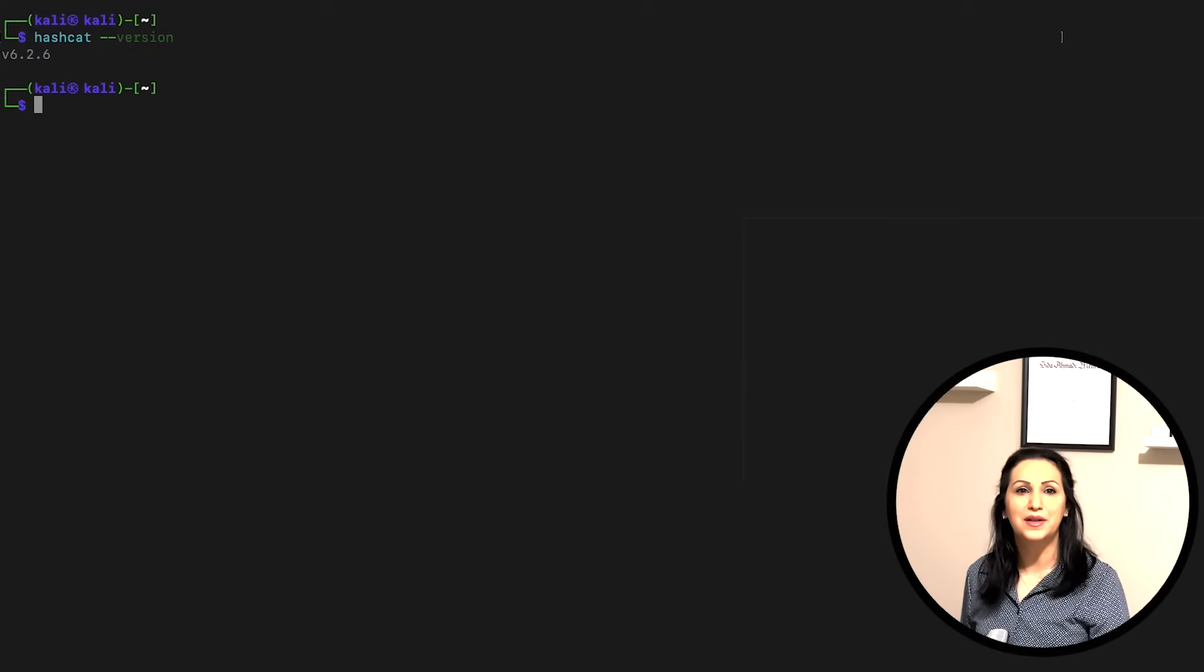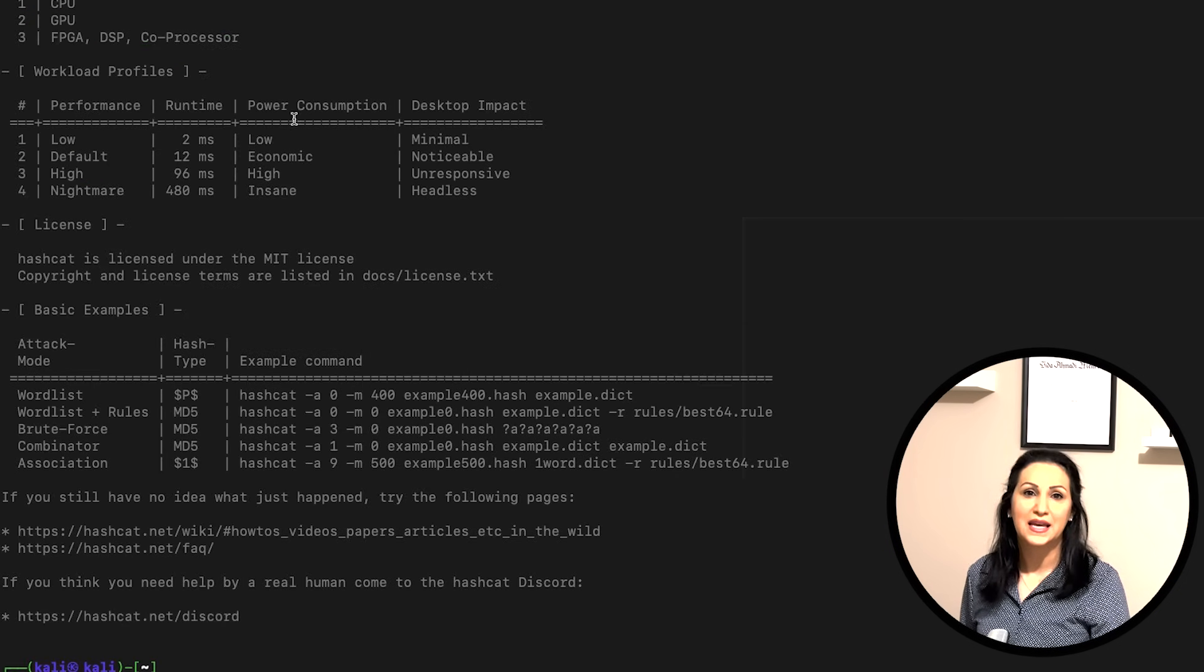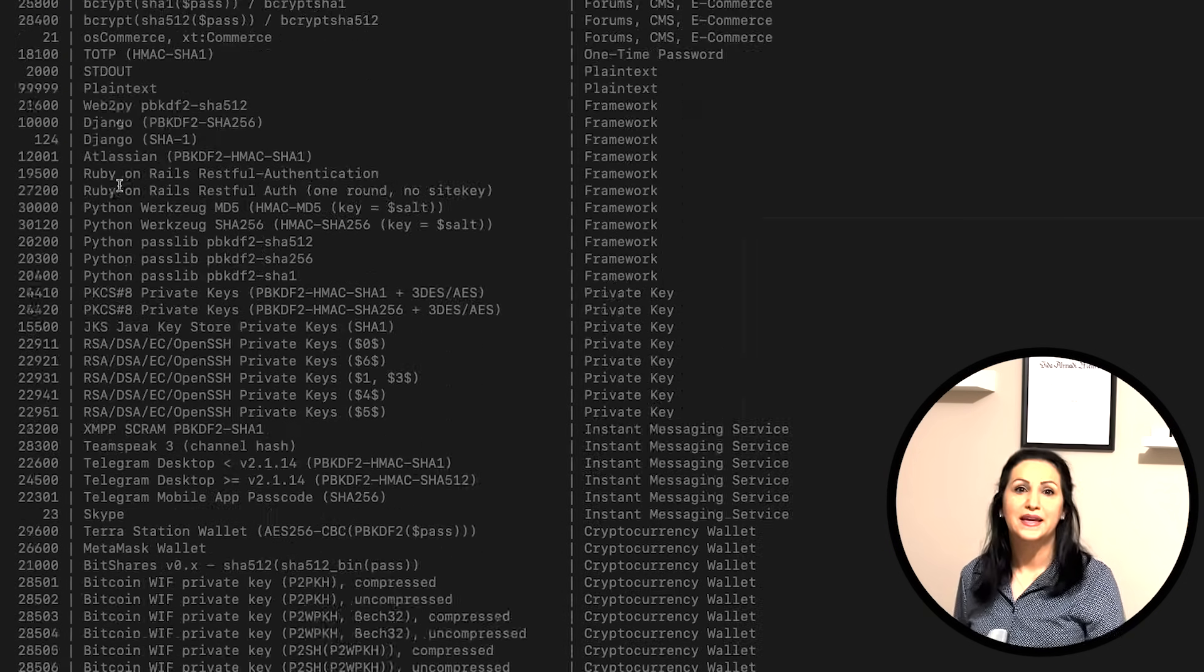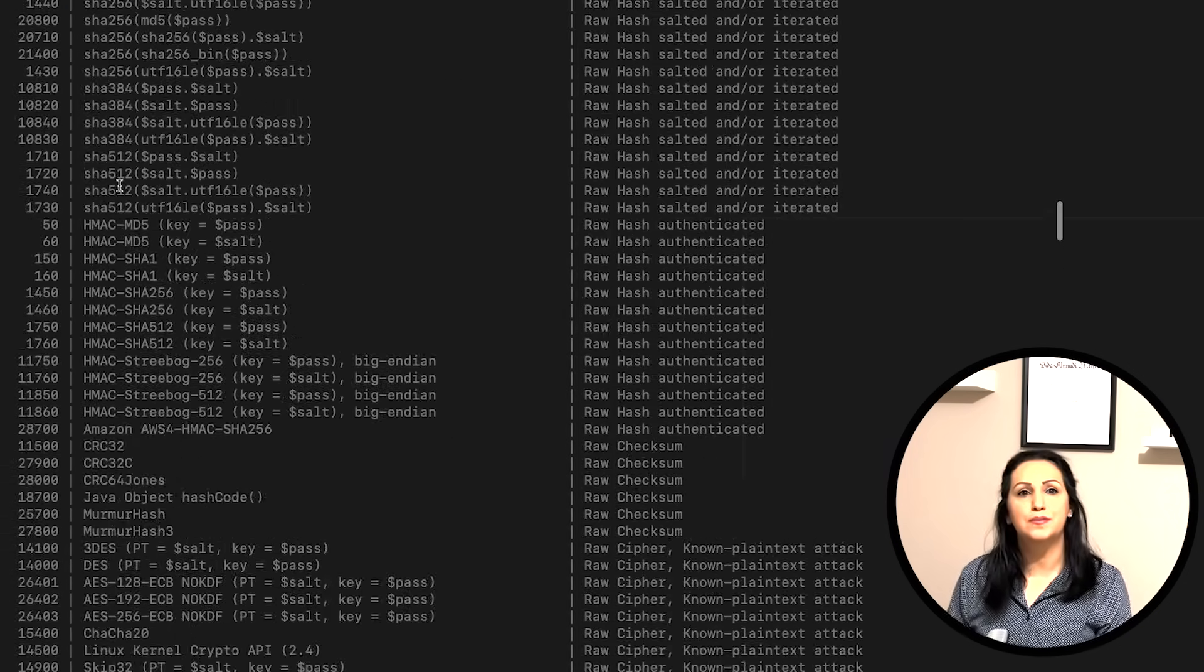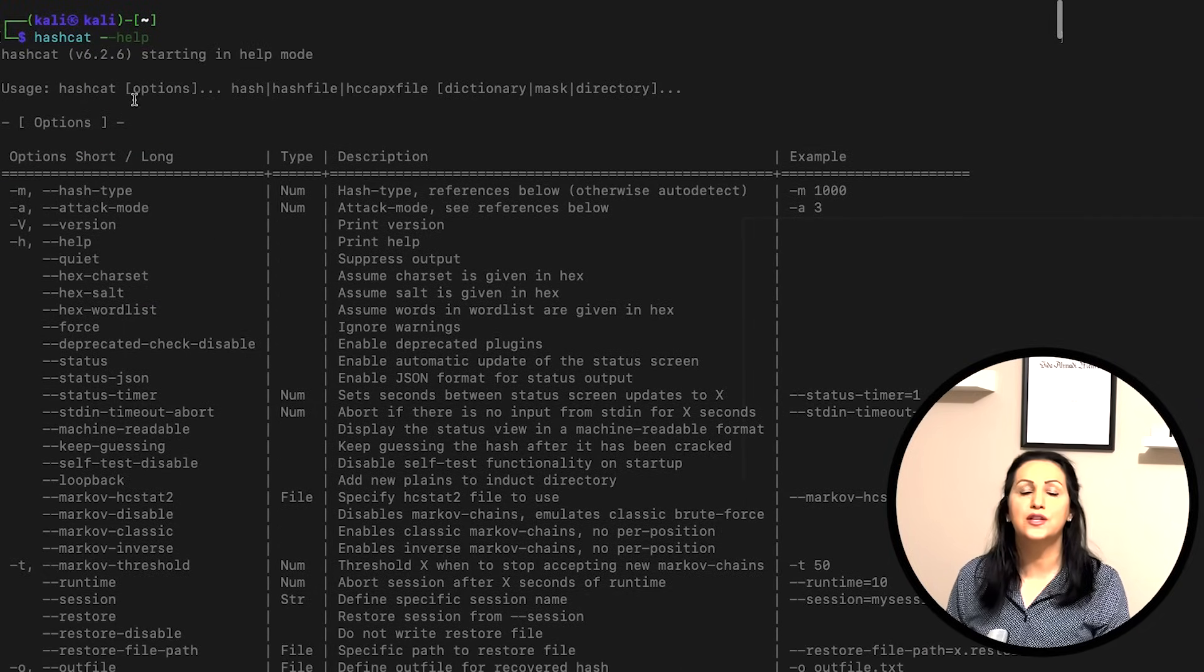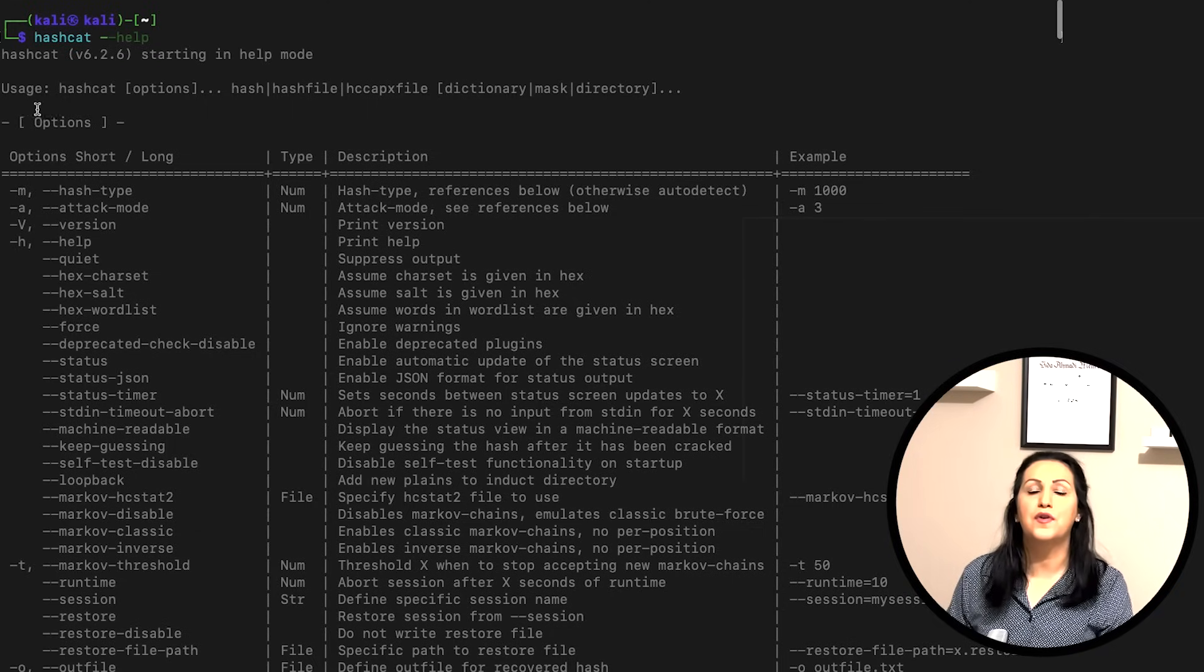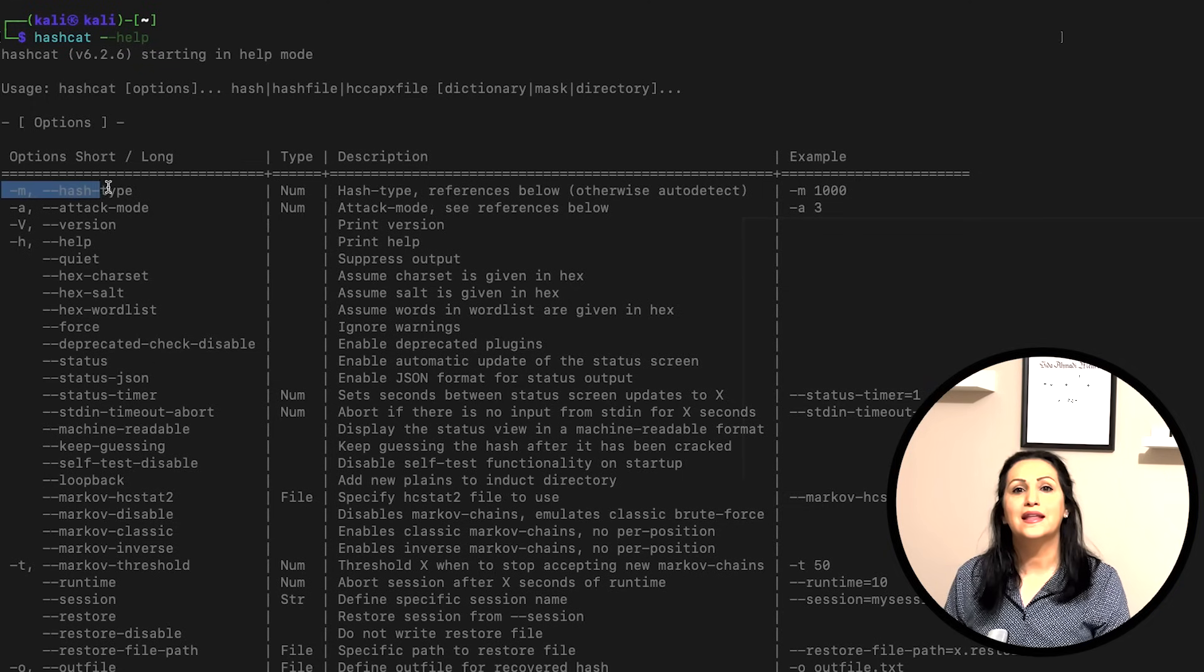On terminal, type hashcat --help. Now scroll up. In usage, it explains what information should be passed in the command line. For example, you can specify the hash algorithm, and after -a, you can define the attack mode.